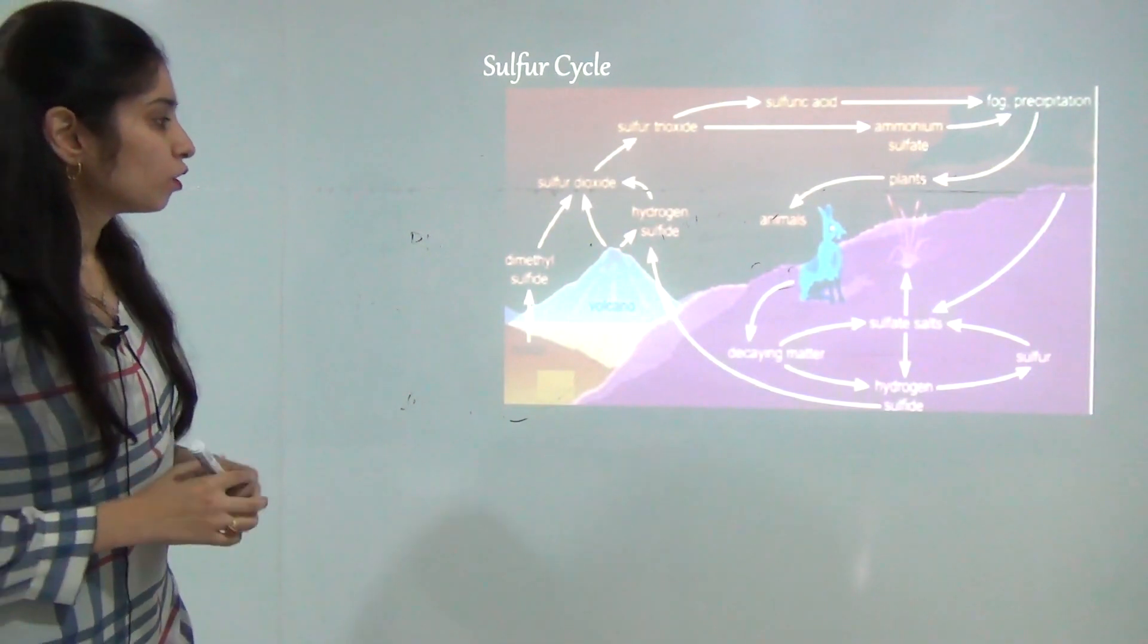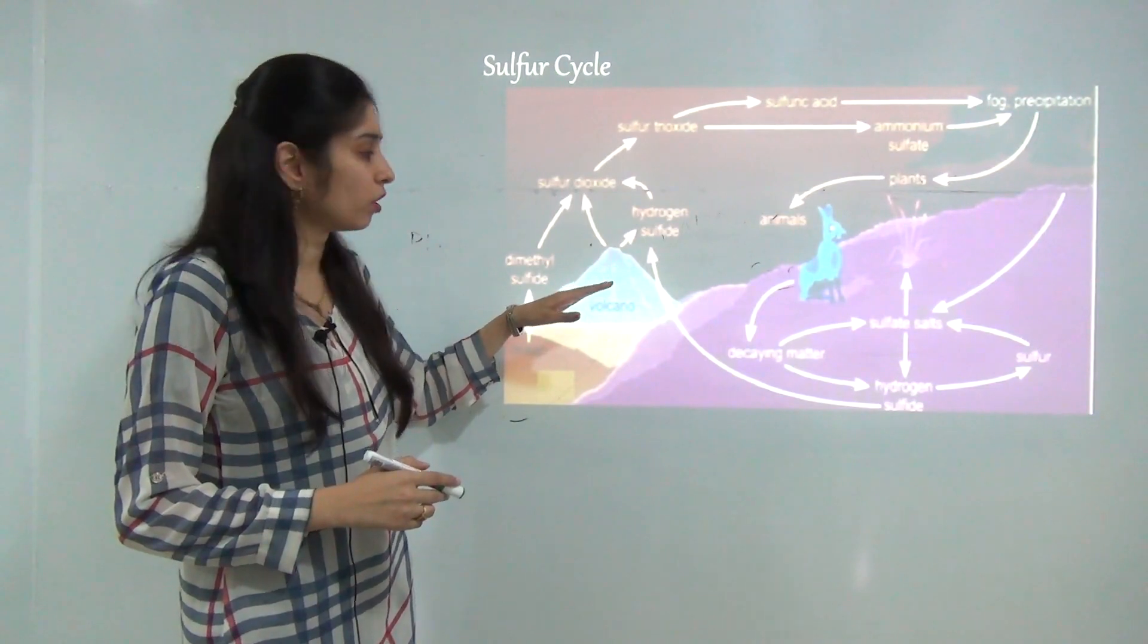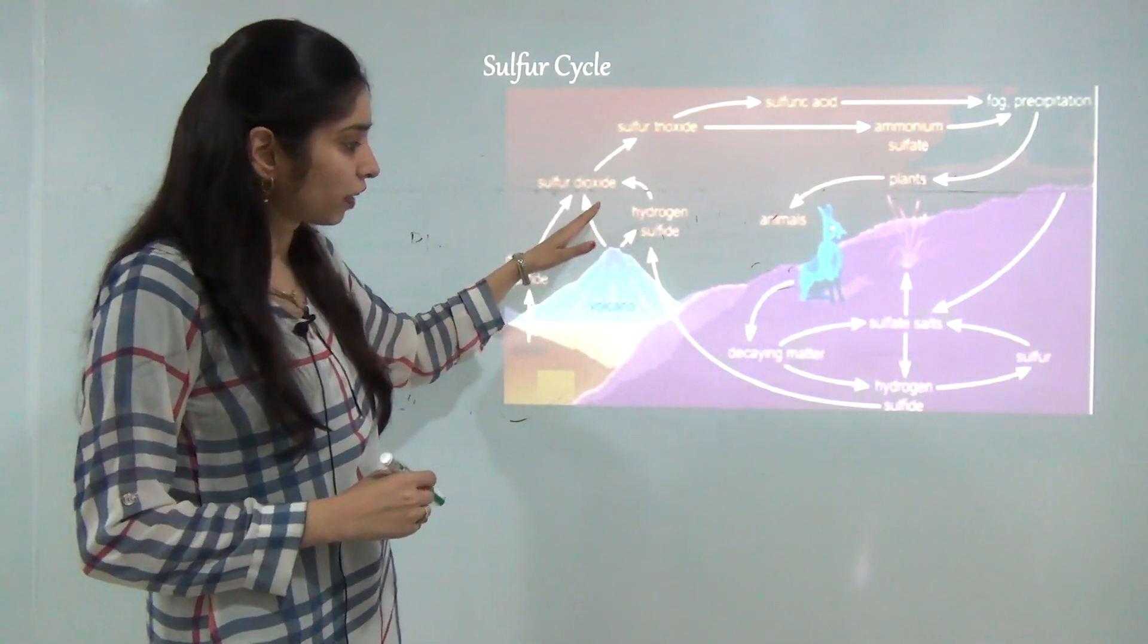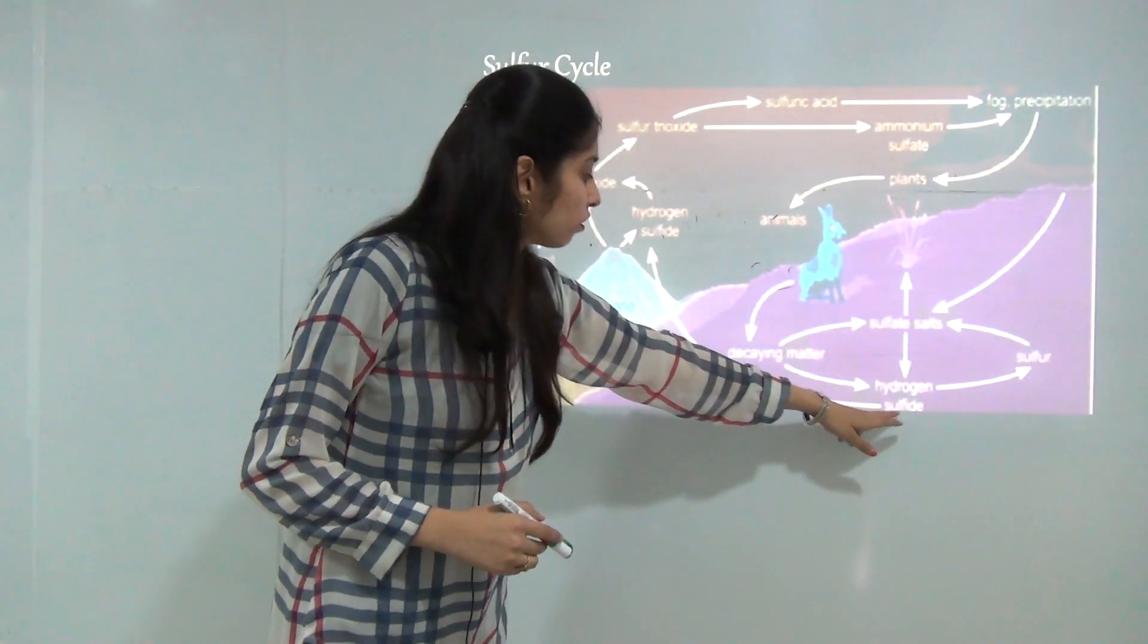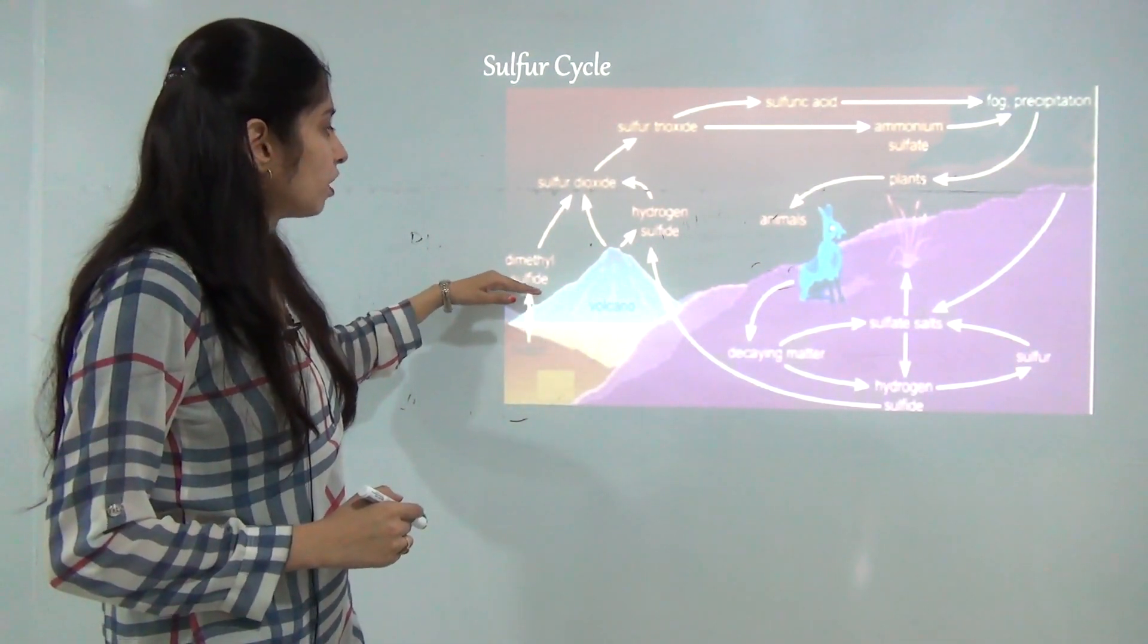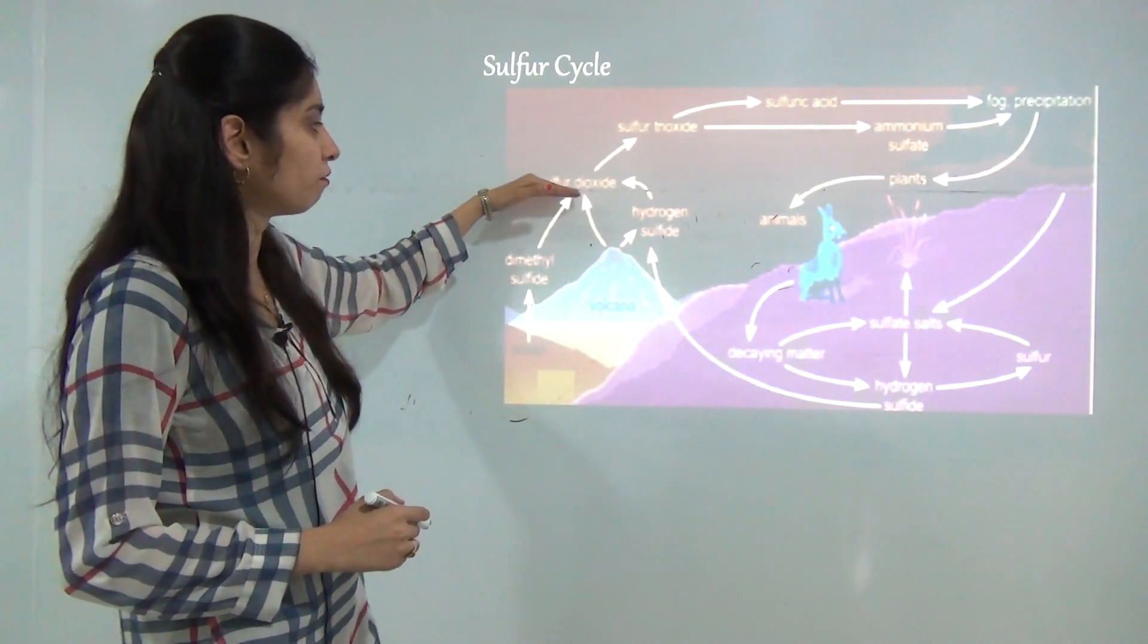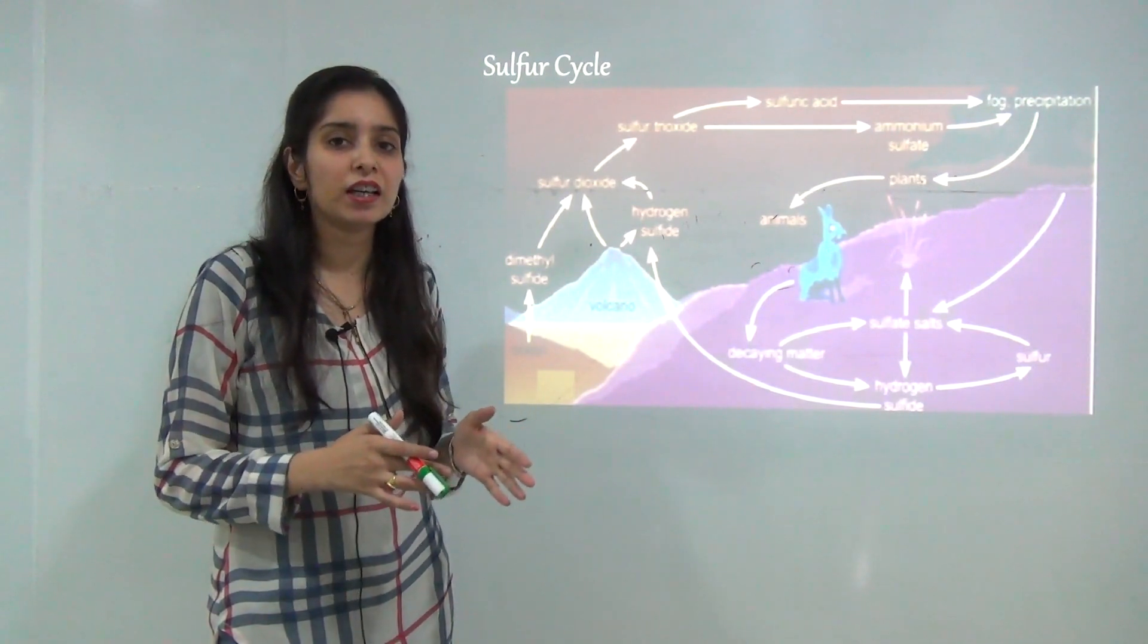In sulfur cycle, due to volcanoes, rocks can damage and break, and there are some gases released from the rocks like sulfur dioxide and hydrogen sulfide. Hydrogen sulfide can also come from the soil by some sulfur containing bacteria. From oceans there is a gas released, dimethyl sulfide, then sulfur dioxide. This dimethyl sulfide is added with oxygen and it makes sulfur dioxide. Sulfur dioxide also released by automobiles, vehicles and factories.